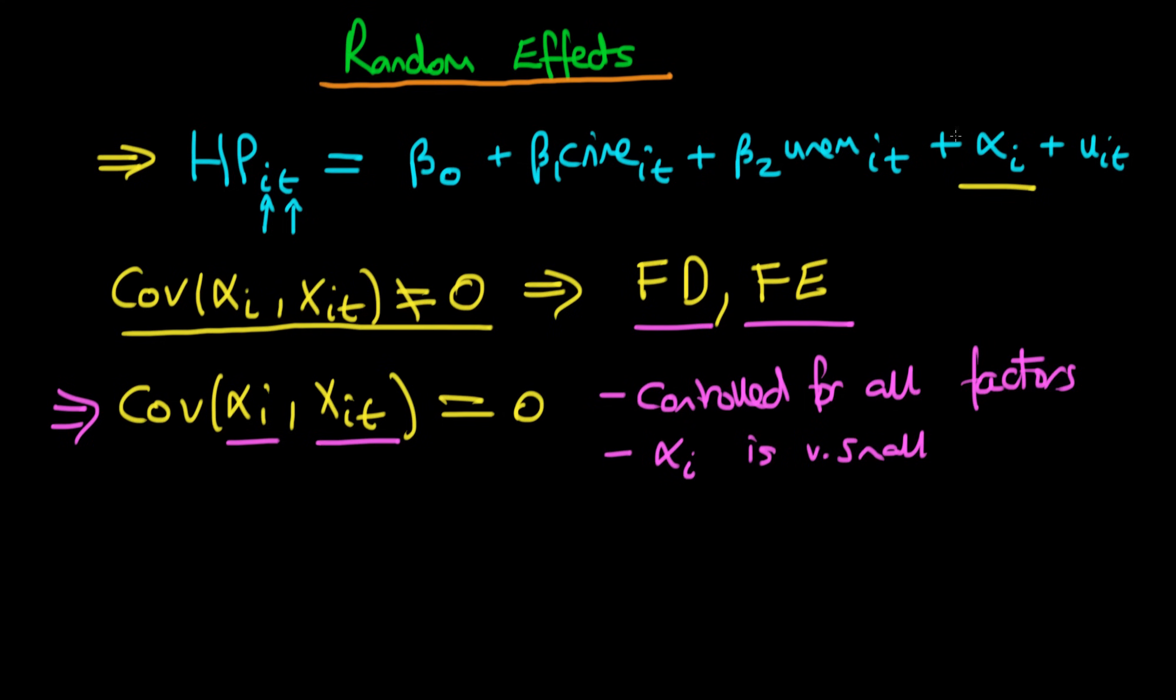If we assume that there is no covariance between alpha i and the independent variables—crime and unemployment in this example—what should we then do? Well, you might be tempted to think that we could just use ordinary least squares on the original model, because the problem with using pooled OLS on this original model was that because of the unobserved heterogeneity, it was going to be both biased and inconsistent. But if we don't have this issue whereby there is some correlation between alpha i and the independent variables, then actually it turns out that pooled OLS is itself consistent, or produces consistent estimates. So using pooled OLS is an absolutely fine thing to do, and similarly, as it turns out, so is using first differences and fixed effects estimation. Both of these two types of estimator are themselves consistent whether or not we have this issue of unobserved heterogeneity which is correlated with the independent variables.